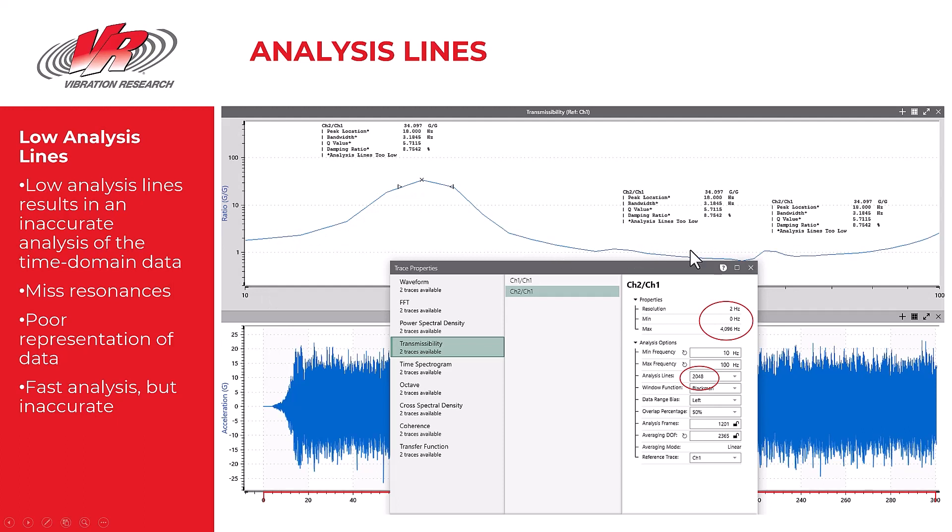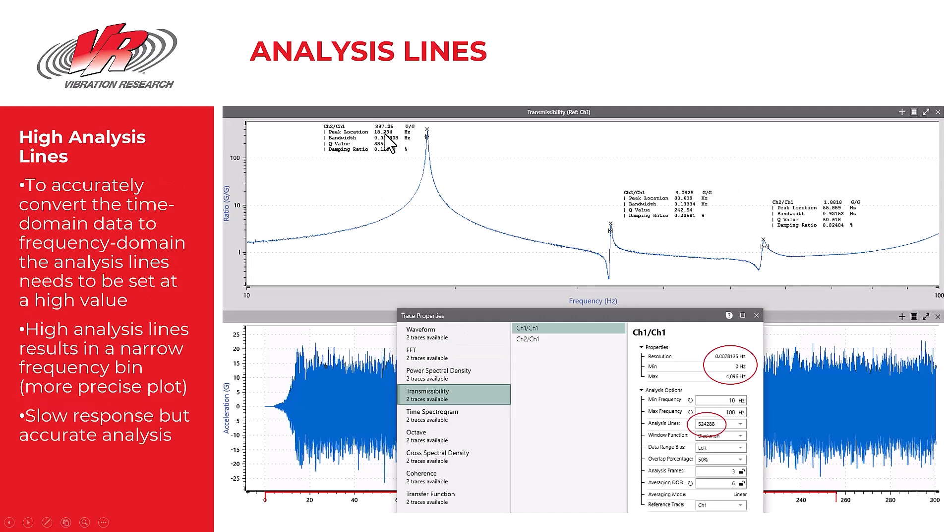This has a peak of some 34 G's per G transmissibility. And the real frequency domain had a transmissibility of 397 G's per G and very smooth plot. And other resonances showed up when I chose a very high analysis lines of 524,000.